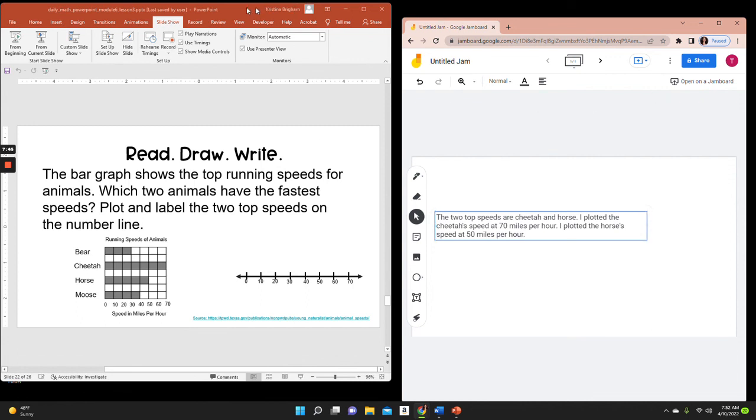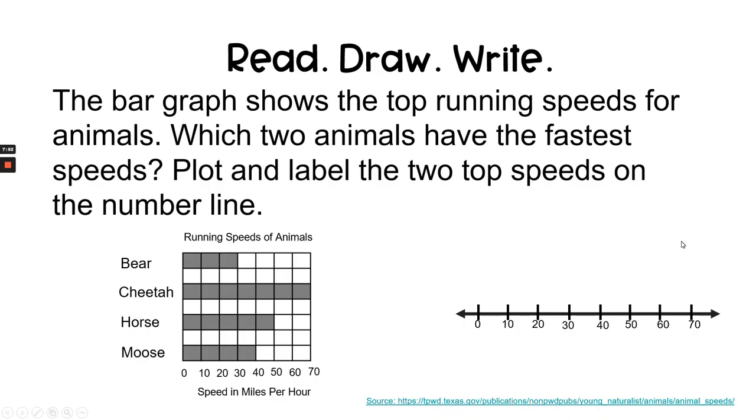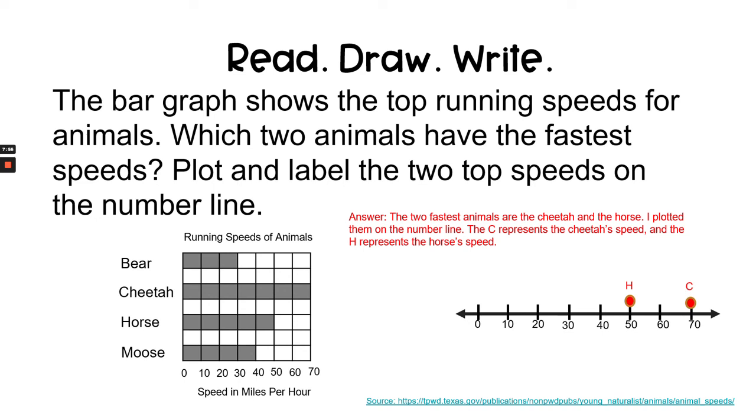Let's now check our answer. Answer: the two fastest animals are the cheetah and the horse. I plotted them on the number line. The C represents the cheetah's speed, and the H represents the horse's speed.